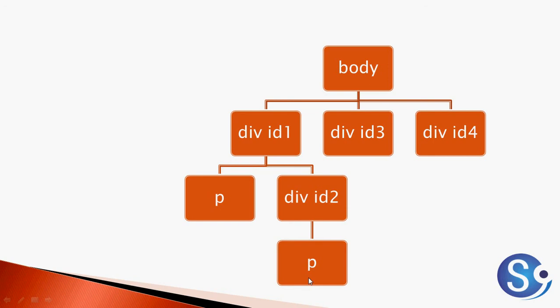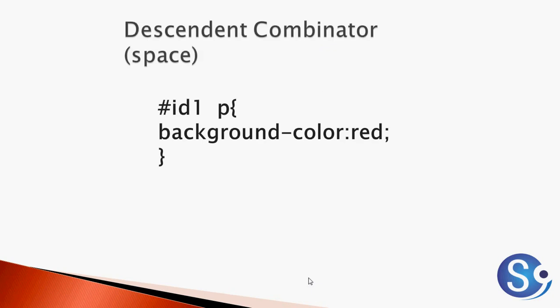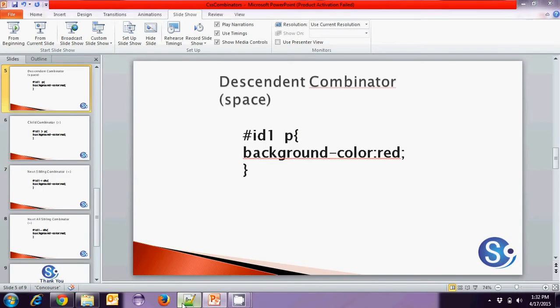The first CSS combinator is the descendant combinator. This combinator is defined with a space. So when we say `#ID1 p` with a space, all the P tags which are under ID1 will have the background color of red. Let's consider this example.